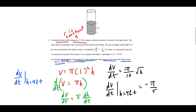In this question we're working with feet and seconds. Since we're finding the rate of change of volume and volume is three-dimensional, the units are cubic feet per second — not just feet per second. If it were area it would be square feet per second, and if it were height it would just be feet per second. So the answer to part A is negative π over 5 cubic feet per second.